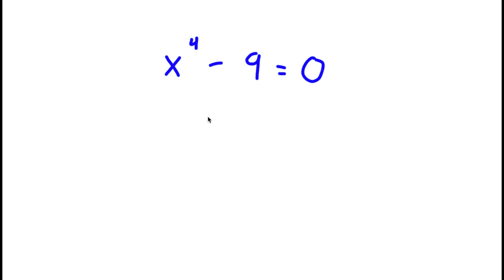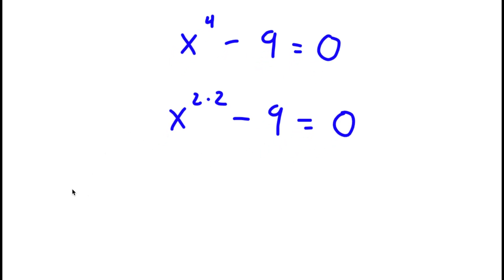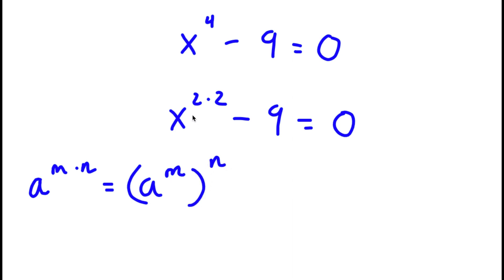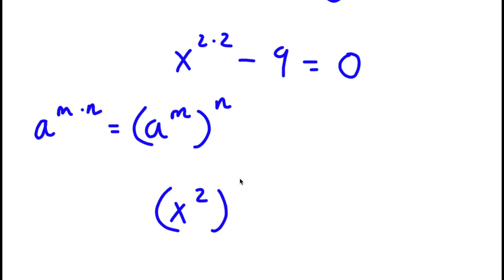So in this problem, I have x to the power of 4 minus 9 is equal to 0. To solve this, I'm going to first replace x to the power of 4 with x to the power of 2 times 2, simply substituting 2 times 2 for 4. So now I have x to the power of 2 times 2 minus 9 is equal to 0. Now if I have something in the form a to the power of m times n, this is equal to a to the power of m to the power of n. So x to the power of 2 times 2 can be rewritten as x to the power of 2 to the power of 2.